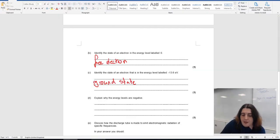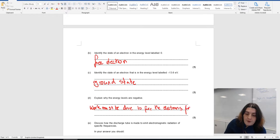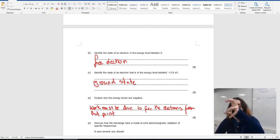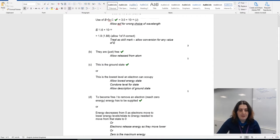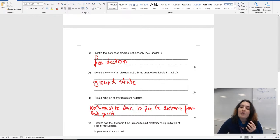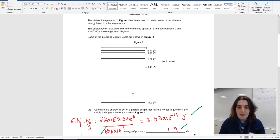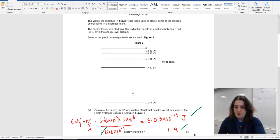And lastly, explain why the energy levels are negative. Now, this actually comes up a little bit later when you do electric fields. The reason that they are negative is because work must be done to free the electrons from that point. So the negative sign is implying that energy must be added to that electron to get it out. If I just go to the mark scheme, it says here to become free, to remove, energy has to be supplied.